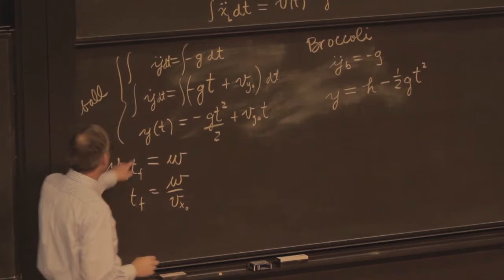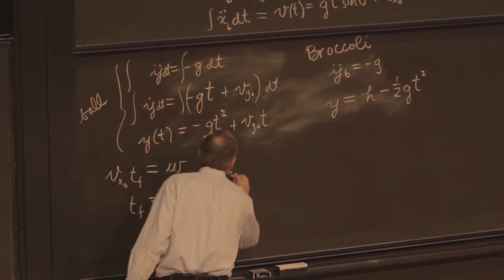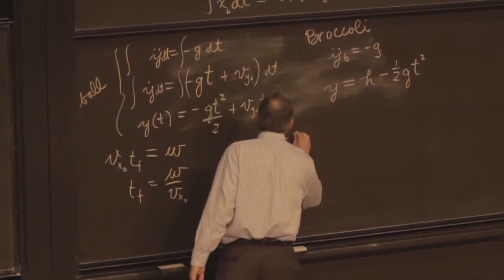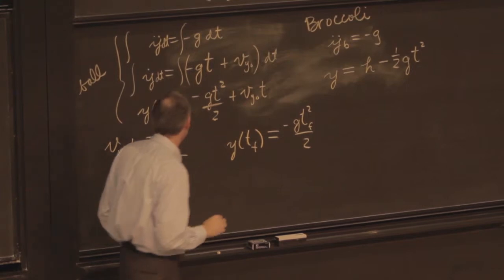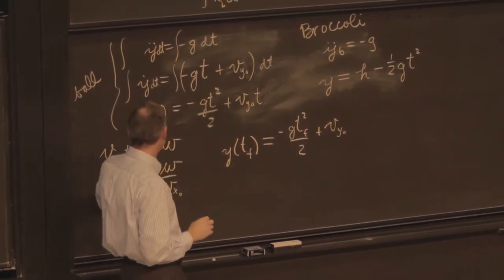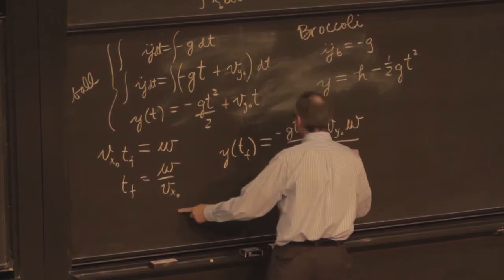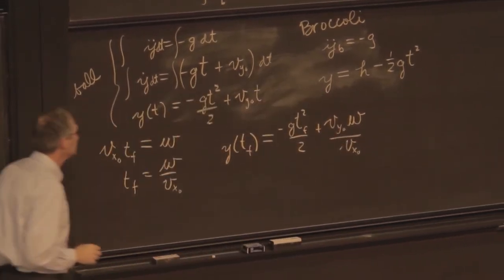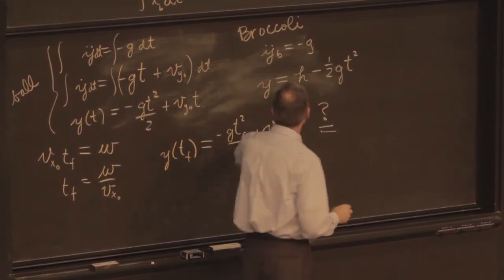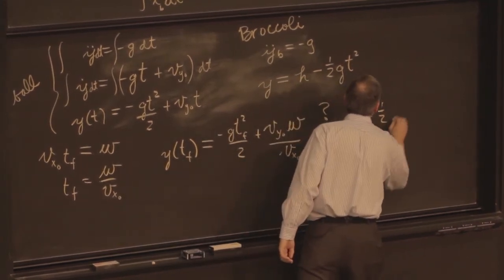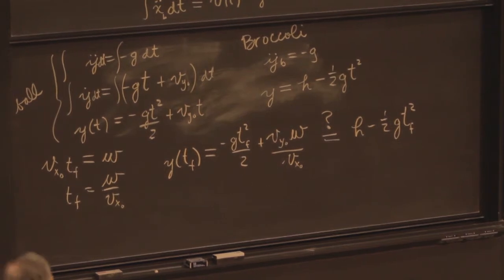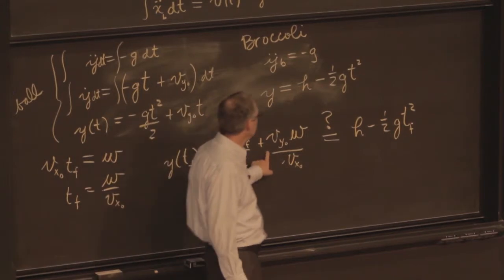I can then substitute that into the equation here to get y at t final. y at t final will be minus g t final squared over 2 plus v y0 times t final w over v x0. And the question is, does that equal this at the same time? h minus 1 half g t squared final. So we have the same factor of minus 1 half g t squared final. The question boils down to whether this quantity is equal to that.